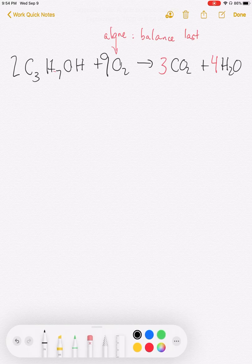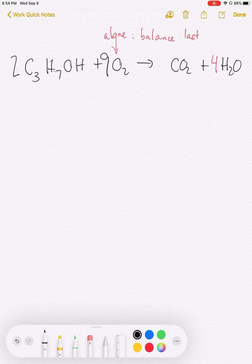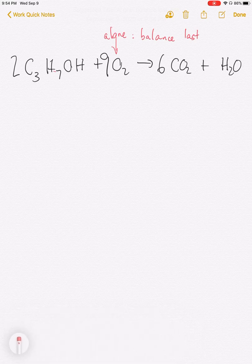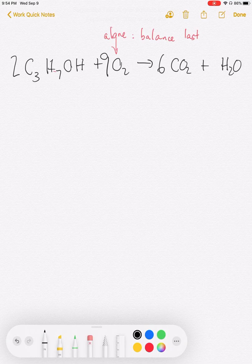I can then double my three and make that a six. I can then double my four and make that a coefficient of eight. And at this point, I will have a balanced chemical equation.